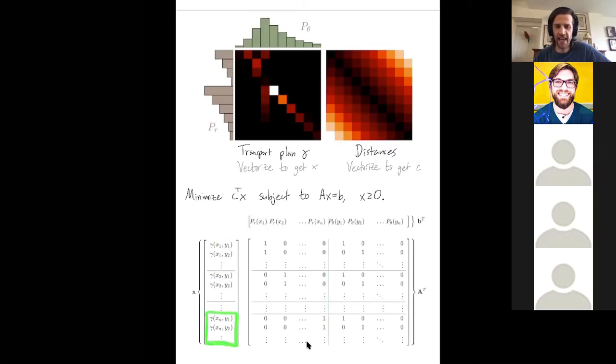This half of the matrix is encoding that the marginals in the other direction recover the measure theta. So for example, let's multiply this by x and I get gamma x_1 y_1 plus gamma x_2 y_1 plus dot dot dot plus gamma x_n y_1. So that's just how much mass was moved to y_1 and it better be the amount in measure theta at point y_1.